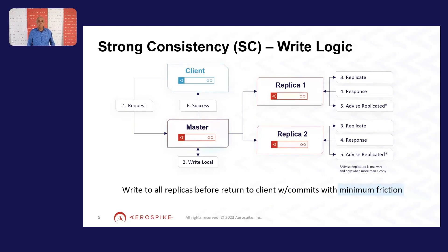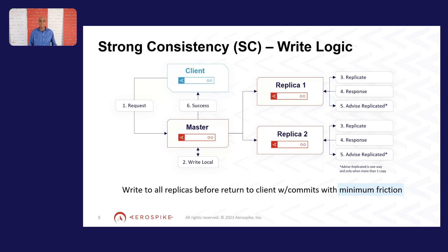An application will dispatch the write operation for any data item to a specific master for that data item, which will then coordinate writes across potentially multiple replicas of the same data item before the write is actually committed. The master and replicas communicate in a two-phase manner — we have optimized this significantly. Once the master receives confirmation that all specific data items are written in the replicas, it can commit the transaction and communicate the commit state to all replicas. The client and replicas are concurrently informed. Fundamentally, it is a write-all mechanism.